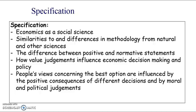This is a specification at start and it's looking at economics as a social science. Now apart from this third specification objective here, looking at the difference between positive and normative statements, economics as a social science and similarities to and differences in methodology from natural and other sciences — these might have been at the beginning of textbooks in the past, but they certainly weren't really examined on.